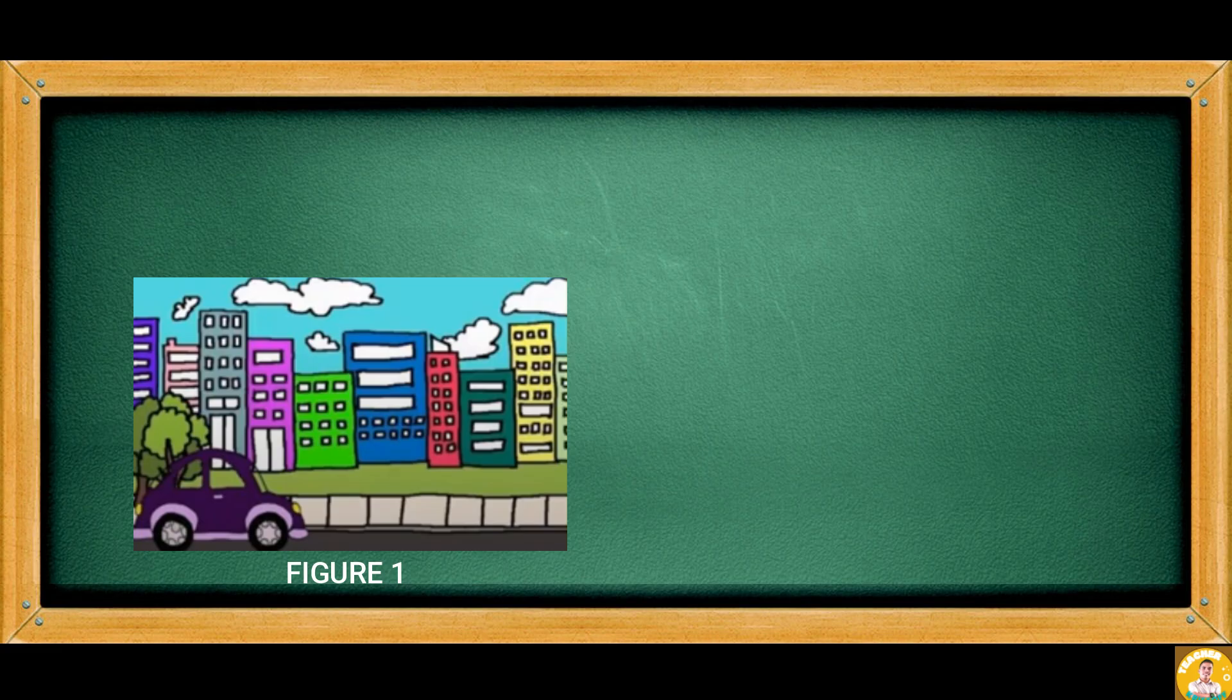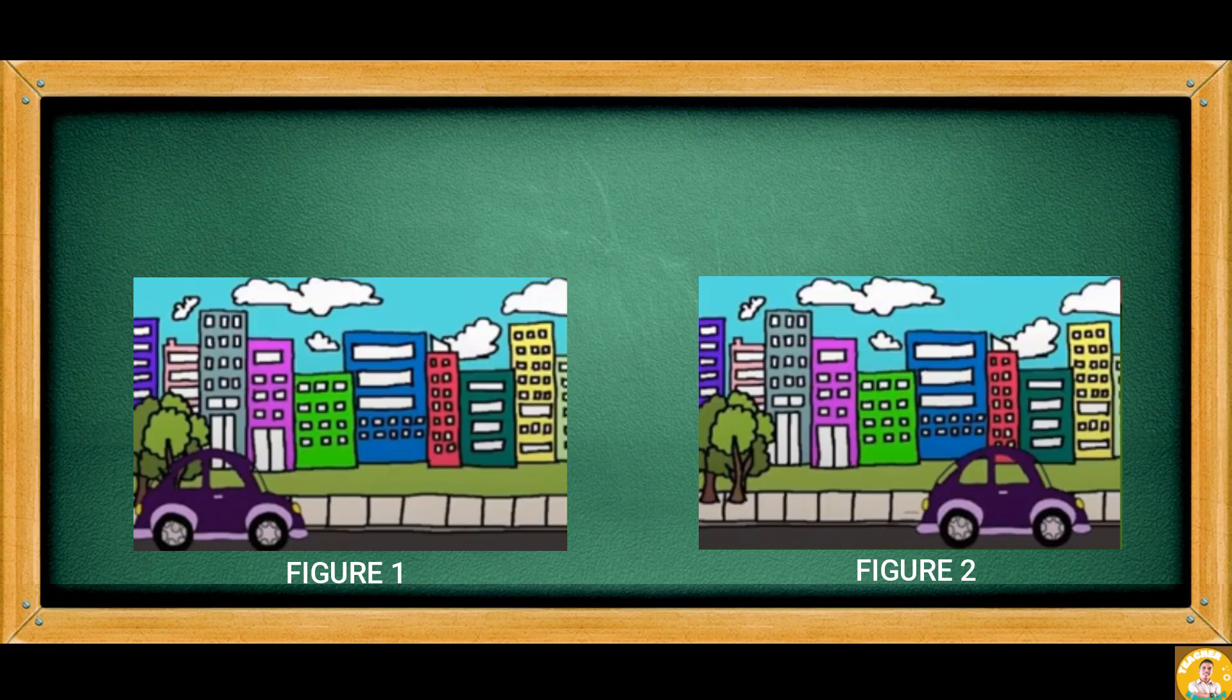Let's observe figure 1 and figure 2. Infer in which figure the car has moved. Is there a change in position of the car in figure 2? Yes, there is a change in position of the car in figure 2. The change in position of the car means that the car has moved.